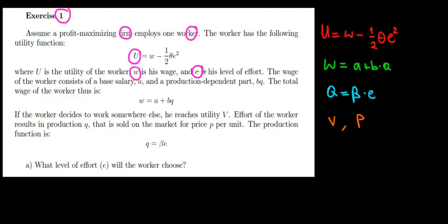The wage depends on a fixed salary and a bonus B for production. There's an alternative utility V in another company, and the quantity depends on the effort put in.